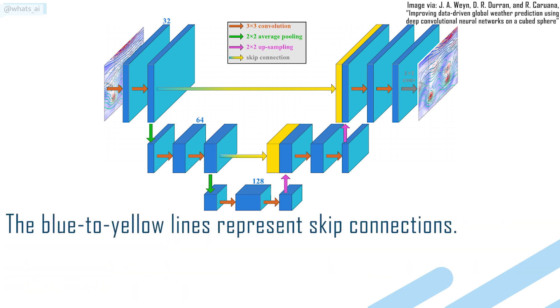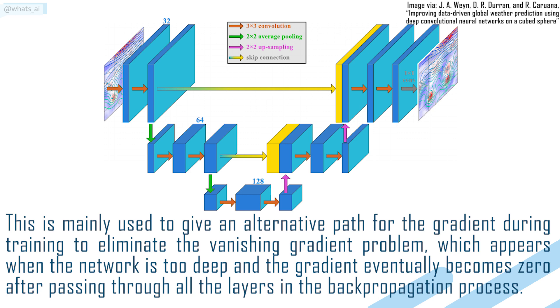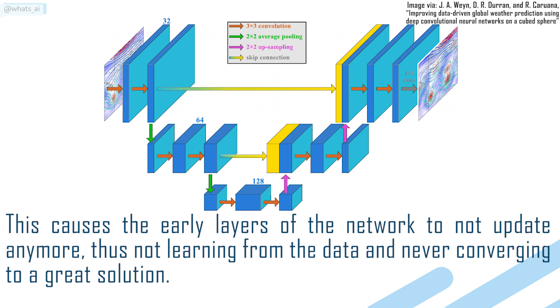The blue to yellow lines represent skip connections. It's frequently used in the UNET architecture to skip some layers in the neural network and feed the output of one layer as the input to the next layers. This is mainly used to give an alternative path for the gradient during training to eliminate the vanishing gradient problem, which appears when the network is too deep, and the gradient eventually becomes zero after passing through all the layers in the backpropagation process. This causes the early layers of the network to not update anymore, thus not learning from the data and never converging to a great solution.